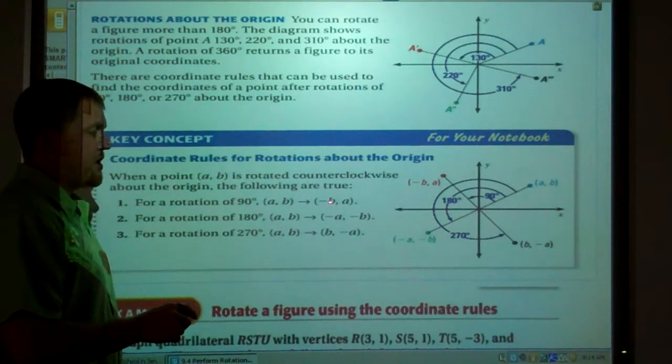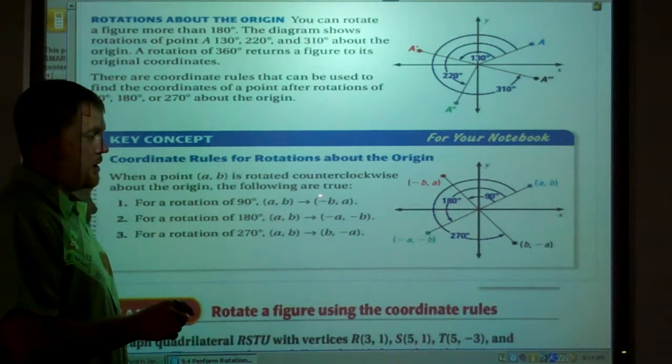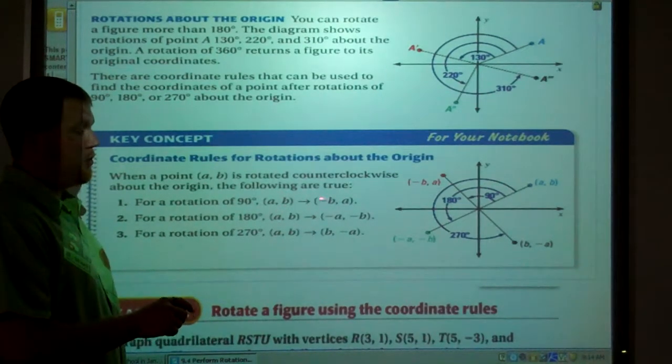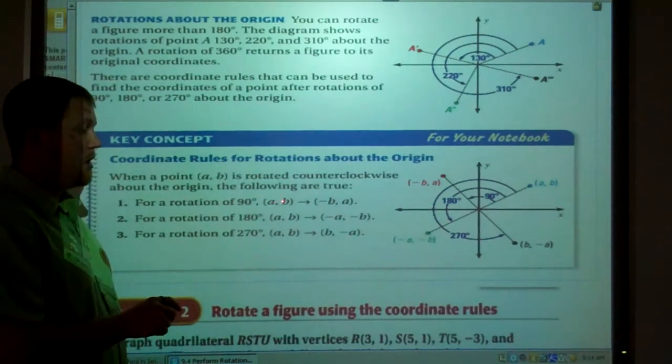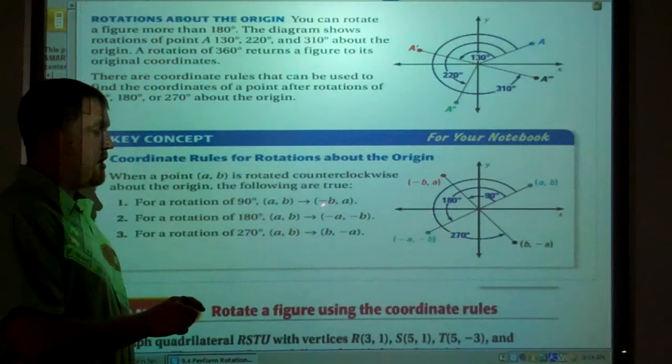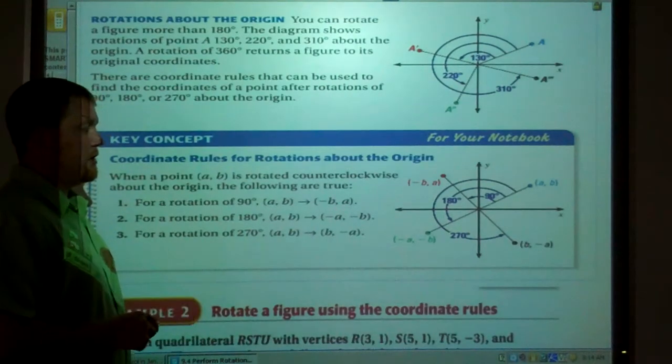The rule is this. You have a point (a, b). You have the opposite of b, not just negative b, because if b starts out originally to be negative, it will now be positive. Because the negative times the negative b would make it positive. So that's the opposite of b, and then a. For your 90 degree rotation.